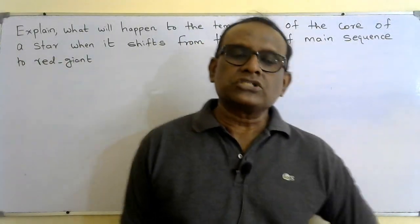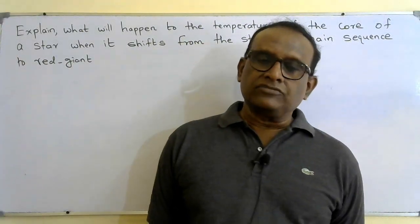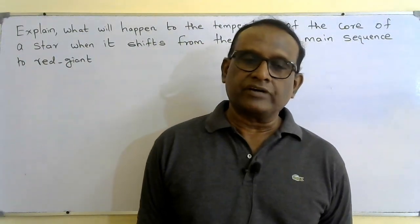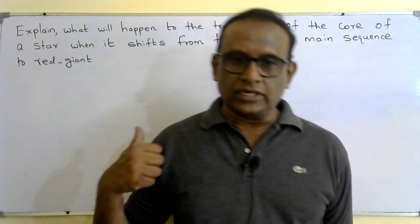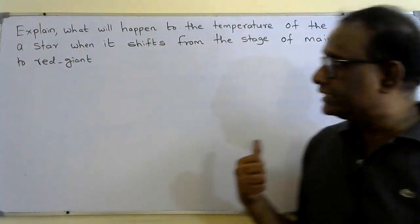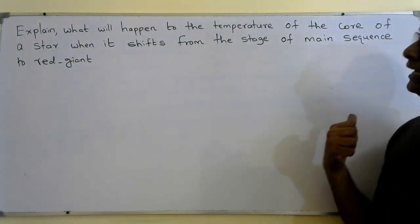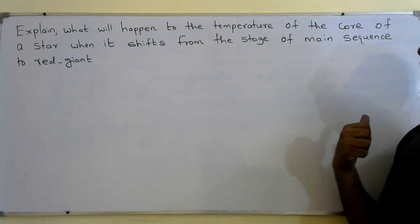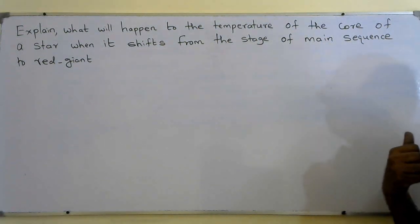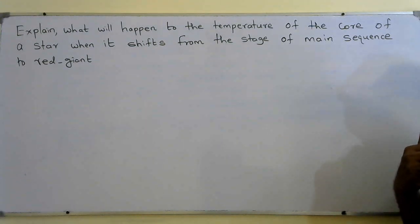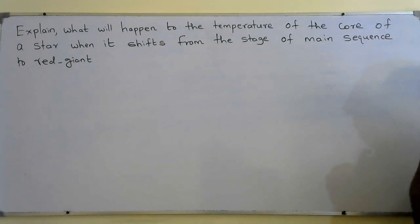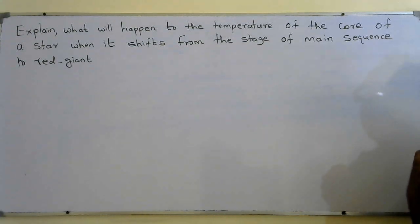Hi, this is a question based on Edexcel IAL Physics, Unit 5, Cosmology. Read the question: Explain what will happen to the temperature of the core of a star when it shifts from the stage of main sequence to red giant.